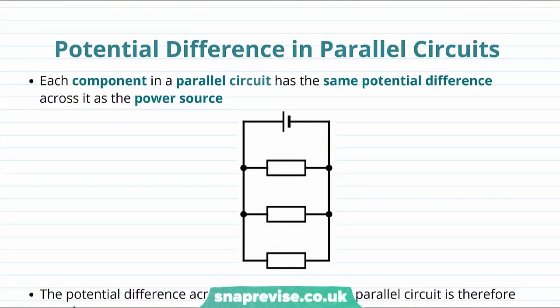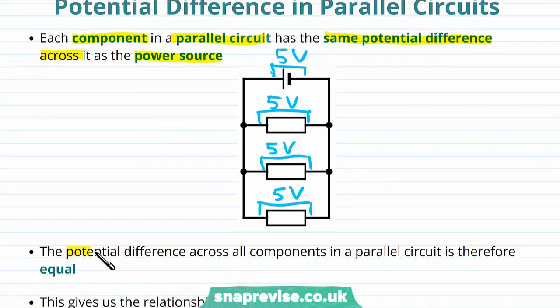Let's start off by talking about the potential difference in parallel circuits. Each component in a parallel circuit has the same potential difference across it as the power source. For example, if the potential difference across the cell is 5 volts, then the potential drop across each of the components is also 5 volts. Another way we could phrase this point is to say that the potential difference across all components in a parallel circuit are therefore equal.